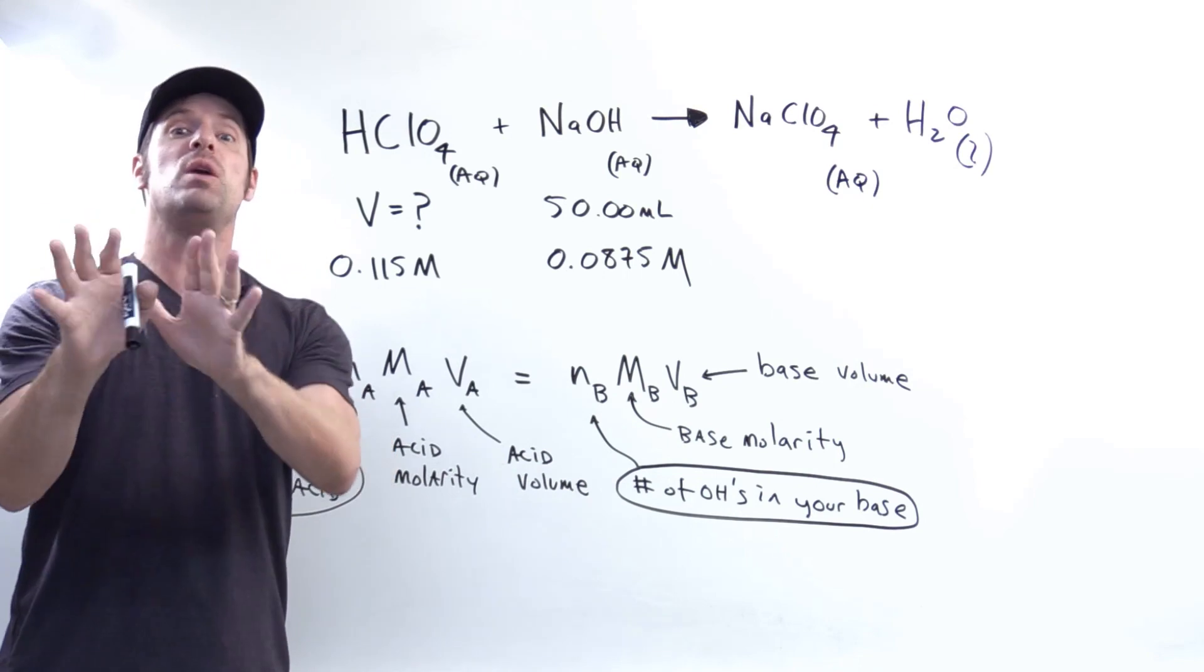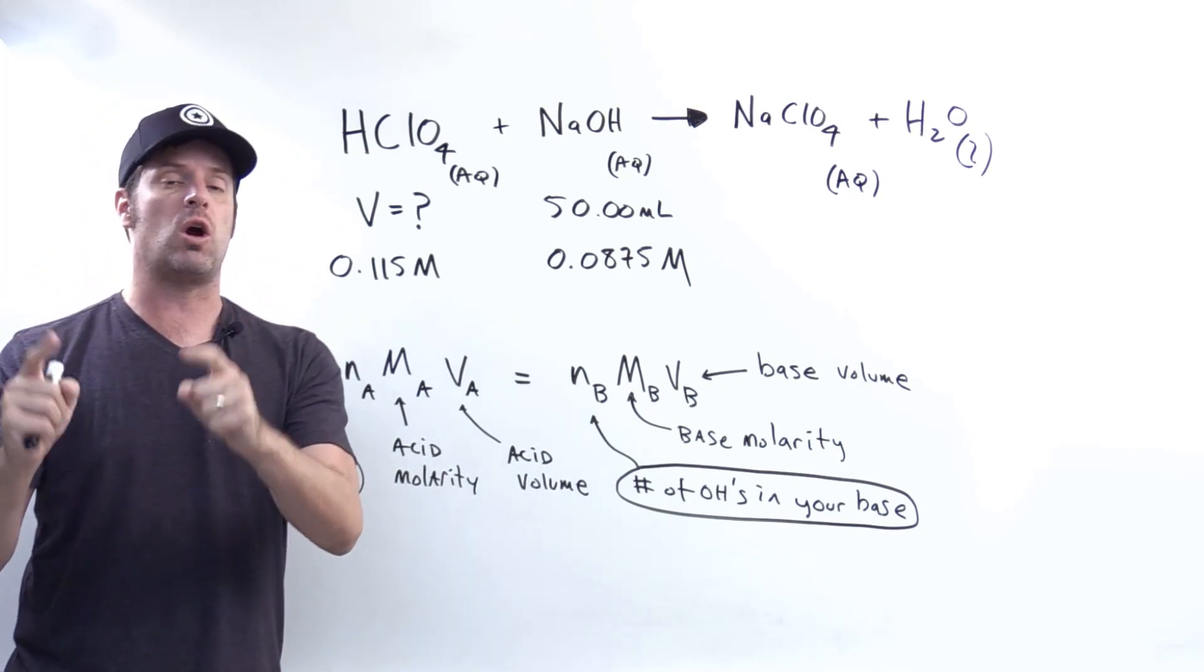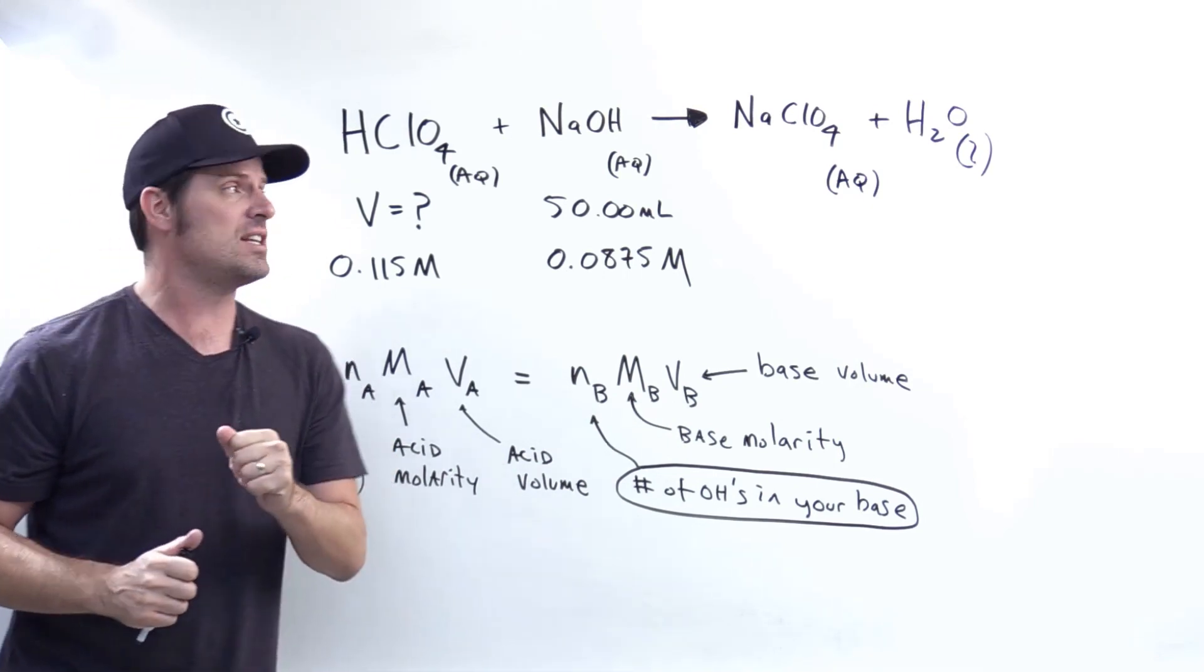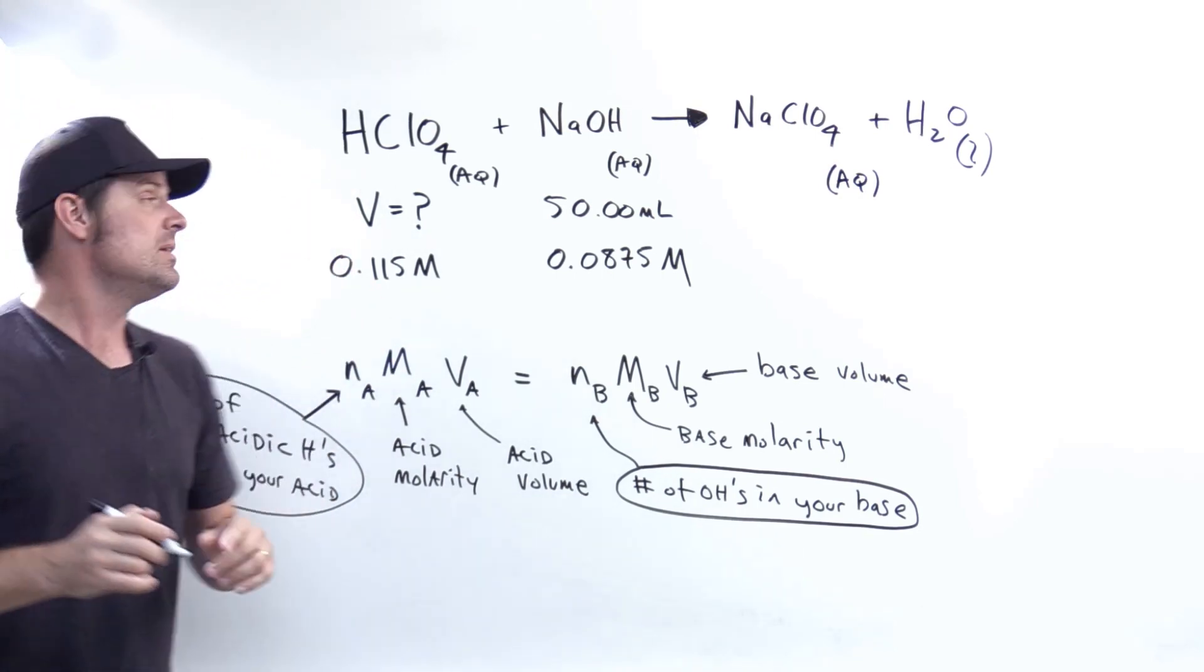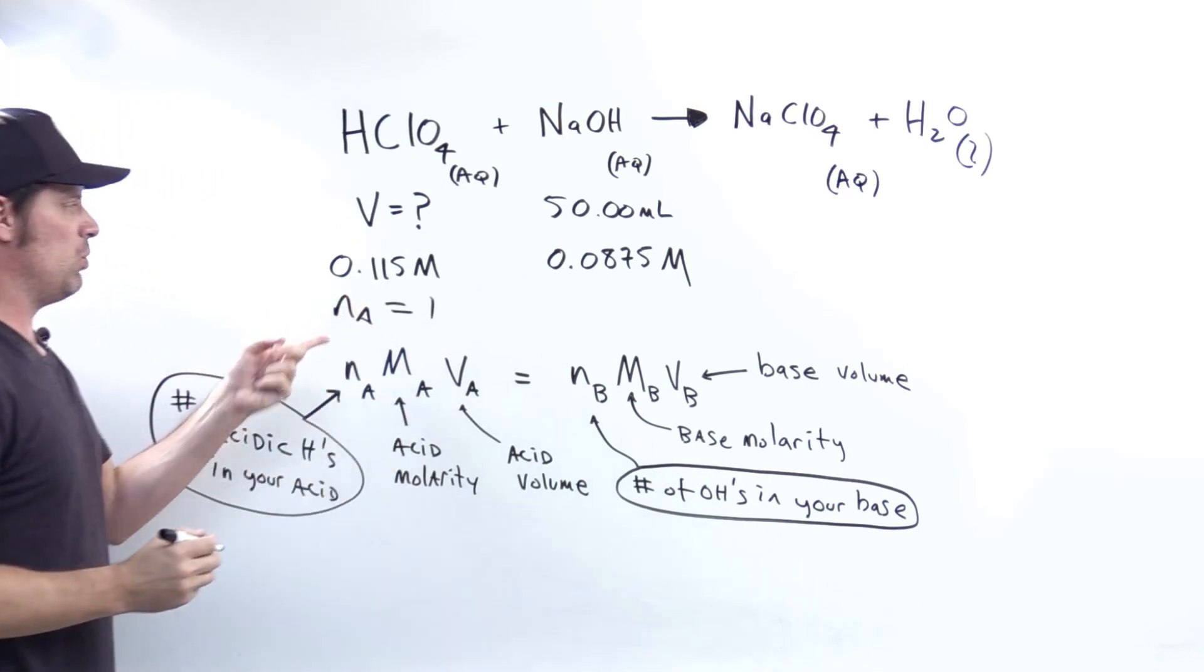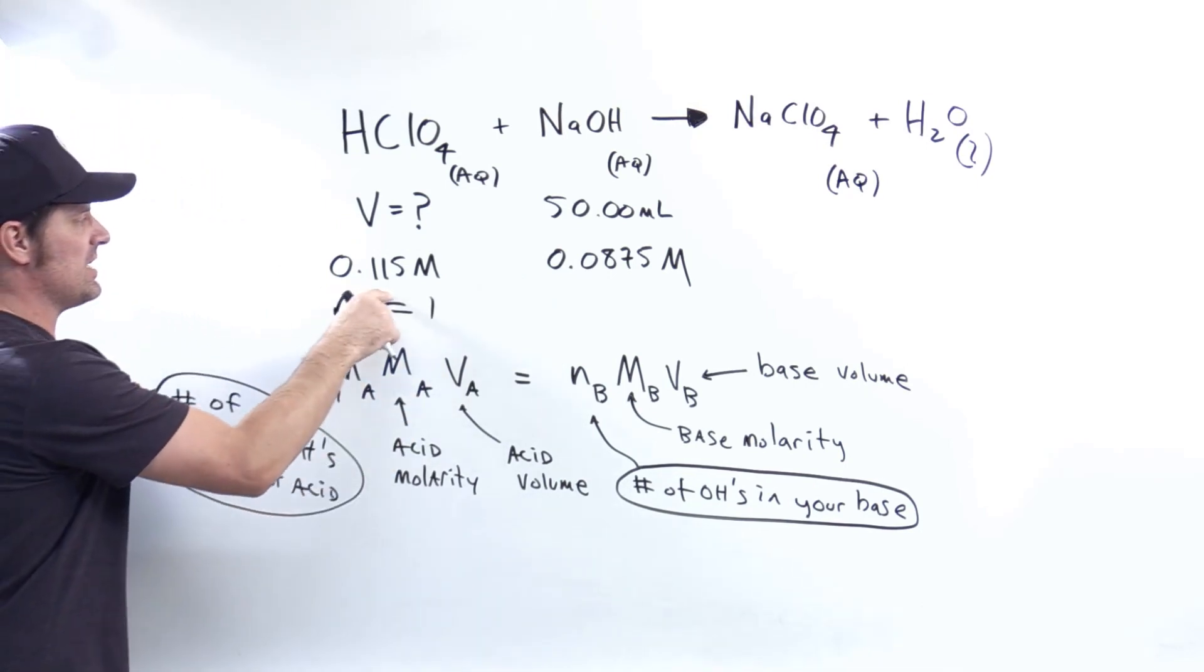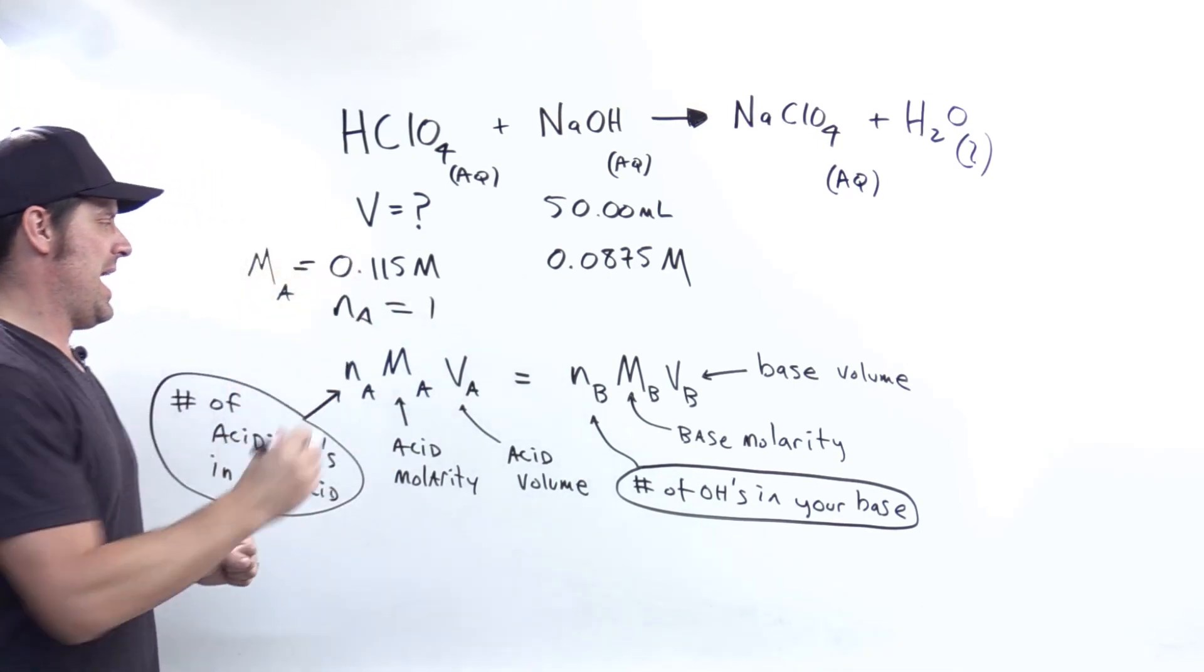This equation works beautifully for strong acid-strong base titration questions like this. As you can see in the system, we have one acidic hydrogen in the perchloric acid formula, so NA equals one. The molarity of that acid is this number right here. And the volume of our acid, VA, we don't know and have to solve for.